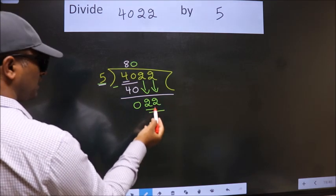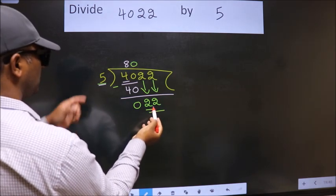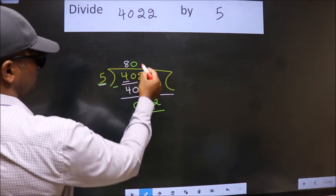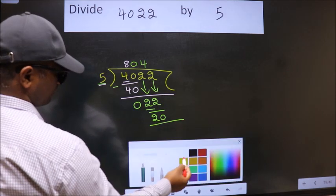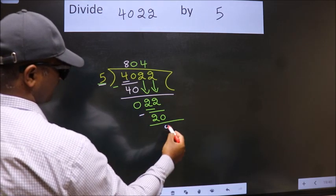So 22. A number close to 22 in 5 table is 5 fours 20. Now we subtract. We get 2.